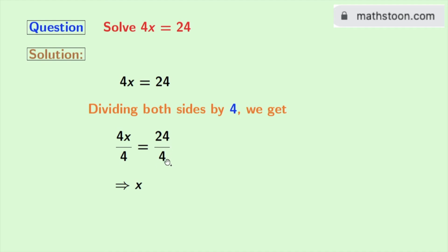As 24 by 4 is equal to 6, so in the right hand side we get 6. So finally we get x is equal to 6 and this is our final answer.